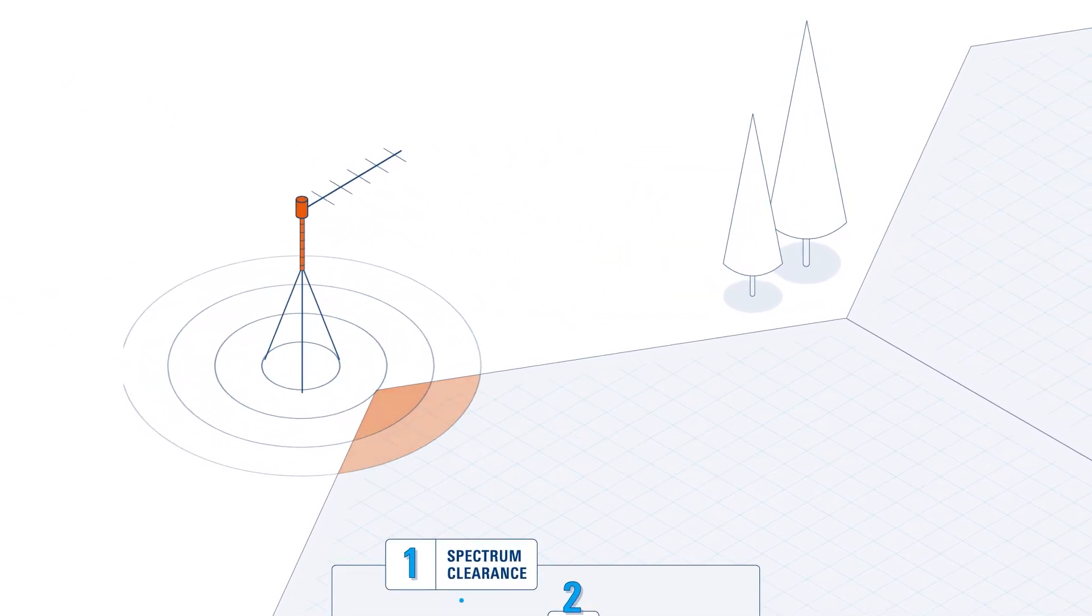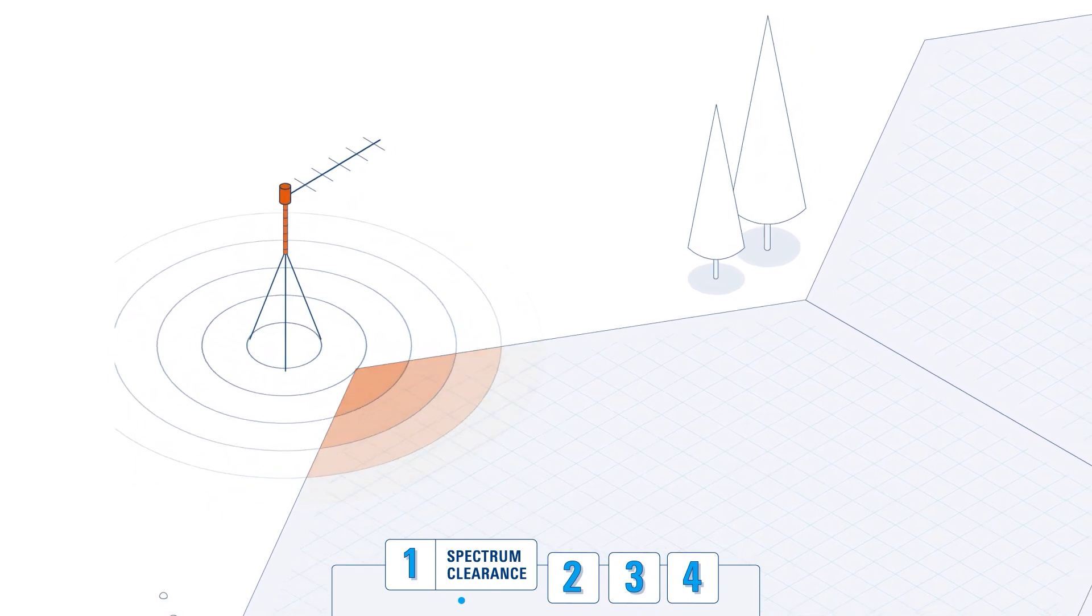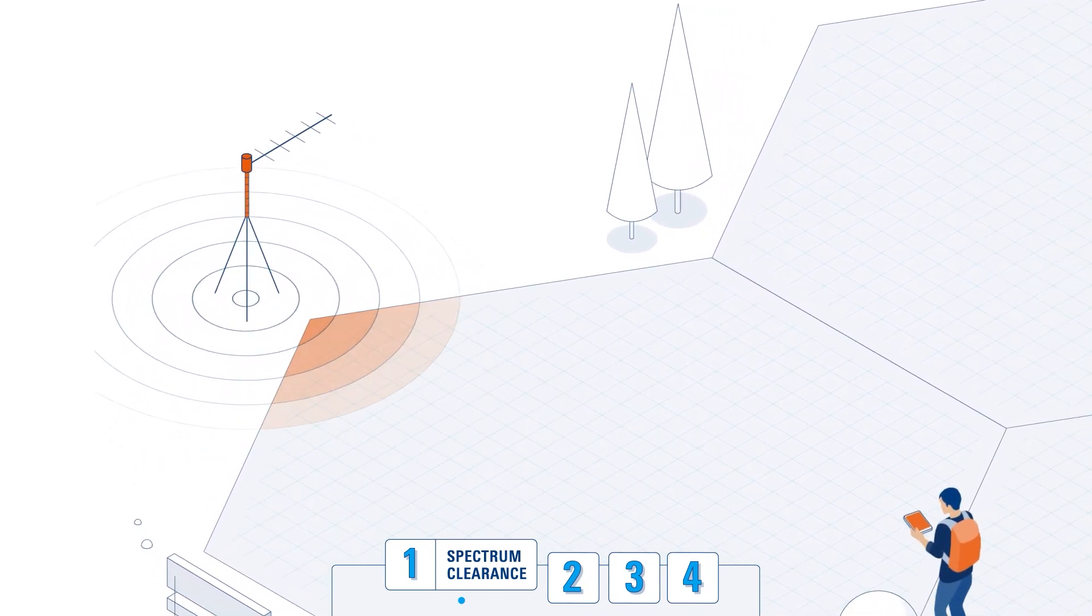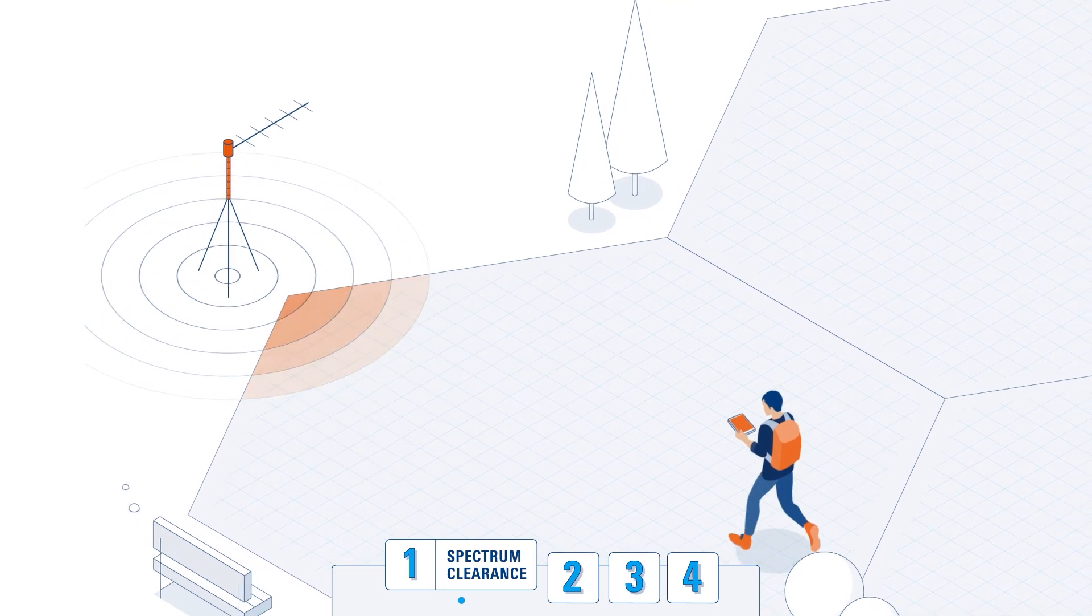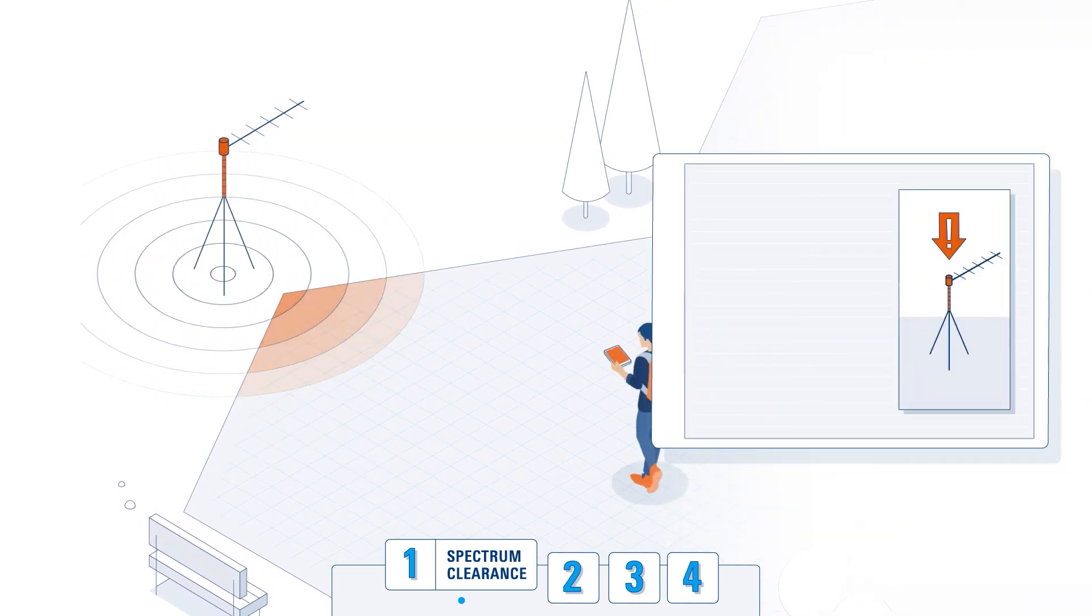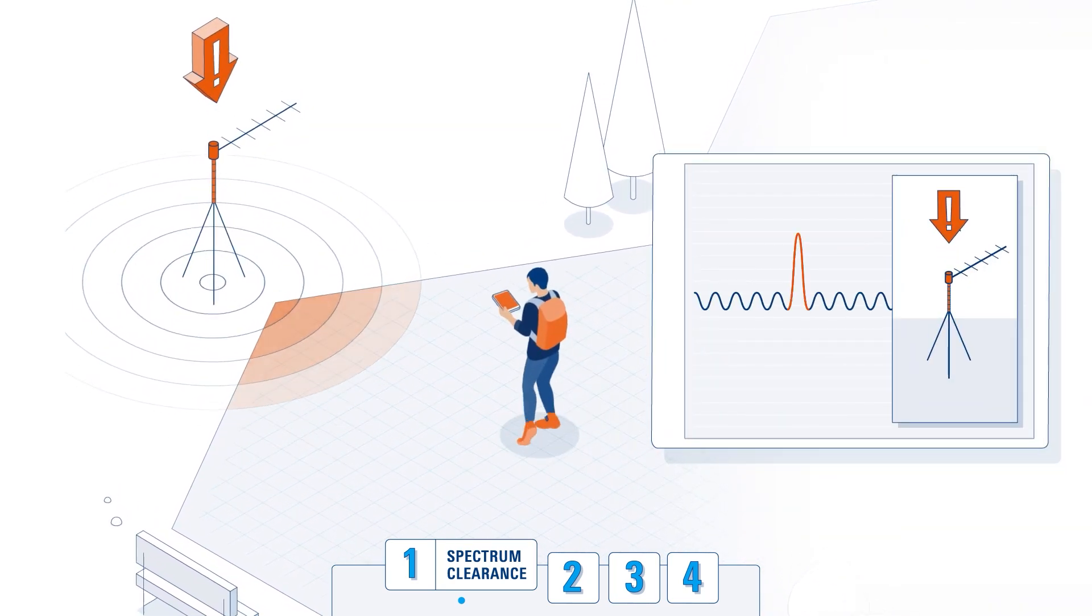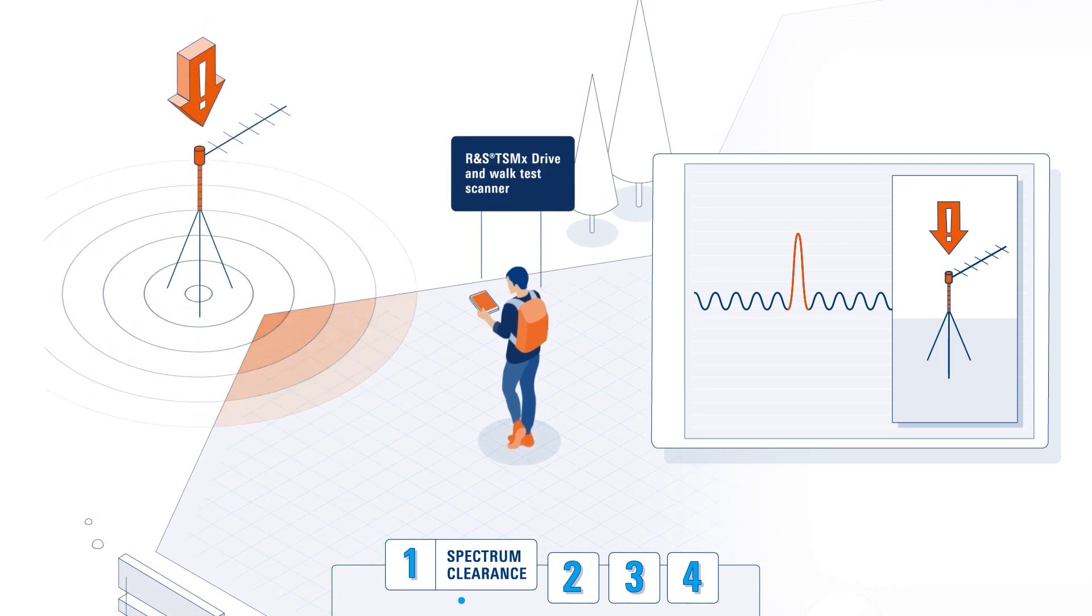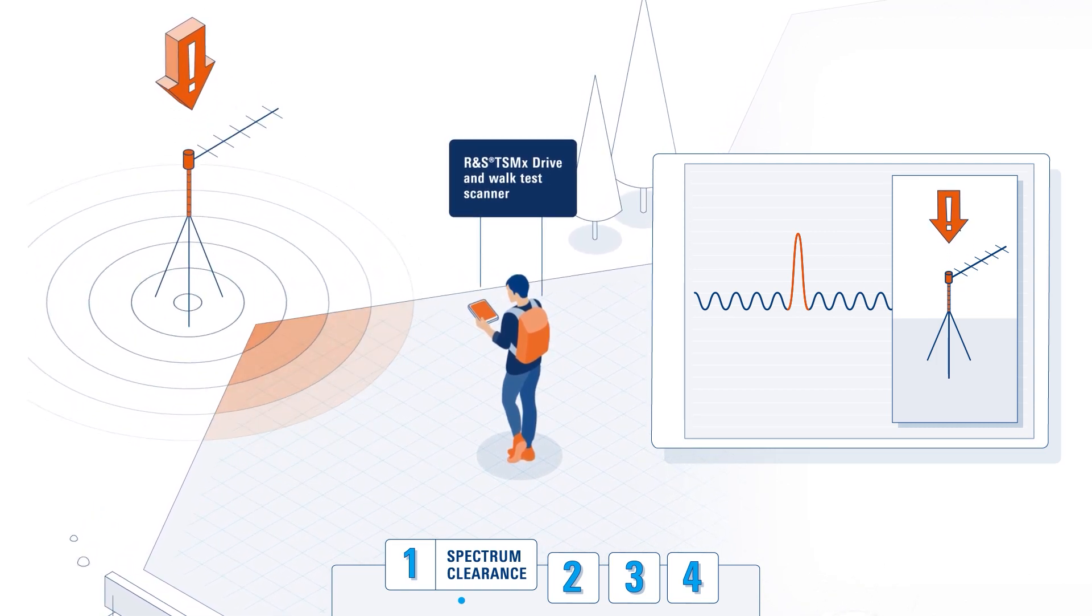The first step is spectrum clearance. This ensures a clean RF environment by eliminating external interference. By walking or driving the area using our network scanner, you can characterize the RF environment at relevant frequency bands and identify potential interferers.